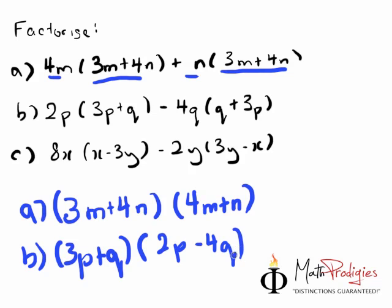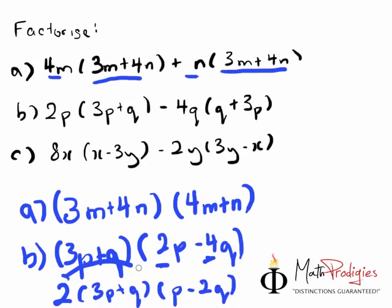Now, what can you do here? In this case, what you must do is, as you can see, there is still some common factors here. So you have to take it out, take out 2, and then you will have 3P plus Q, as well as P minus 2Q. Why? Because we're actually taking out the 2 for this one over here. So 2 times P gives you 2P. 2 times minus 2Q gives you 4Q, so it's correct. So the answer is 2, 3P plus Q, P minus 2Q. Hope you got this right.